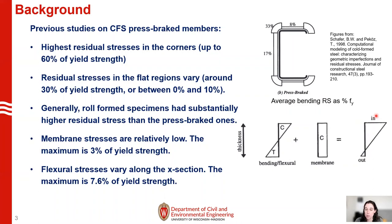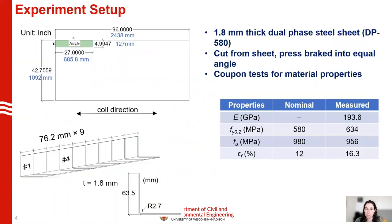We want to know what the residual stress magnitudes and distribution are for advanced high strength steel cold form steel angles. We have a 1.8 millimeter thick dual phase steel sheet, DP580.